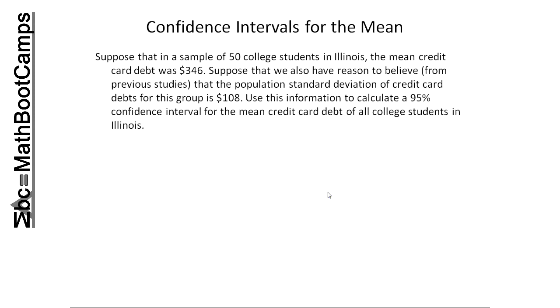Looking at this particular problem, it says we have a sample of 50. That's a big group. The mean credit card debt for this group was $346. We have reason to believe that the population standard deviation is 108. Use this information to calculate a 95% confidence interval. So the important information I have here is I have a large sample size.